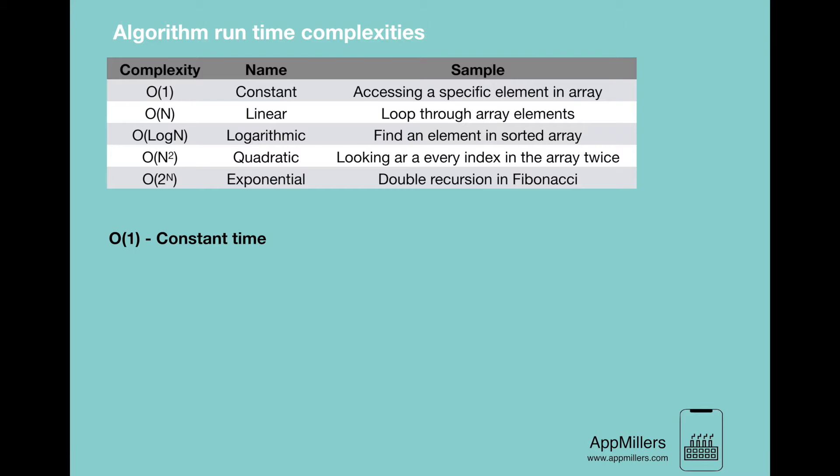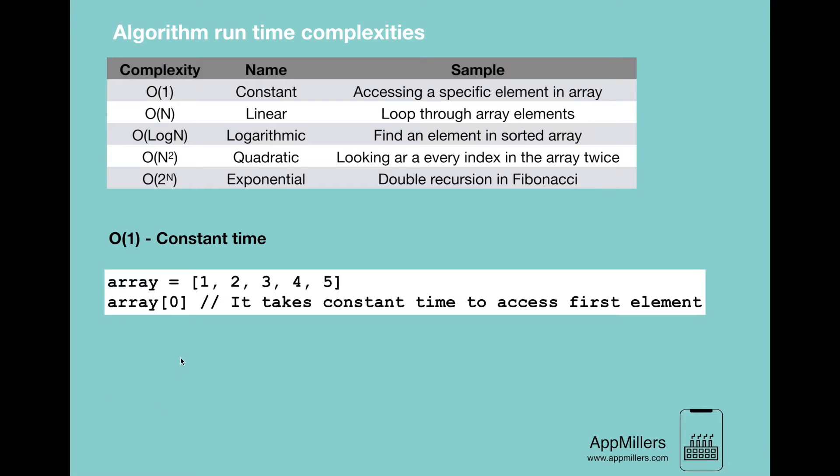Constant time complexity means that for any given input, the execution time will not change — it will remain constant. As an example, accessing a specific index within an array: it does not matter whether the array has 10 or 100 indices, looking up a specific location in the array will take the same amount of time.